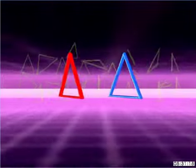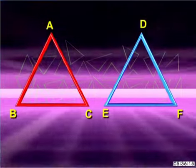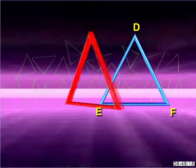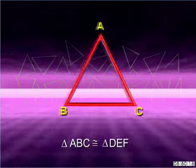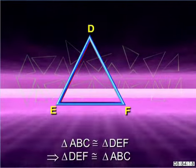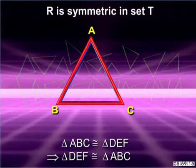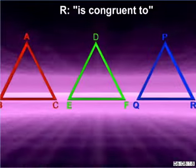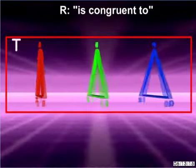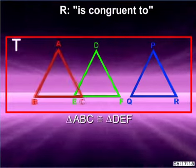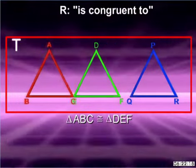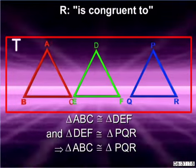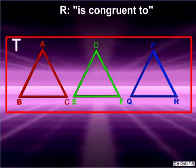Consider the same set T of all triangles in a plane, where triangles ABC and DEF are two elements. If the relation R stands for 'is congruent to' and triangle ABC is congruent to triangle DEF, then we can say that triangle DEF is also congruent to triangle ABC. Conclusively, the relation R is symmetric in set T. Further, if triangle ABC, triangle DEF, and triangle PQR are three elements of set T, and triangle ABC is congruent to triangle DEF, and triangle DEF is congruent to triangle PQR, then the relation R is transitive in set T.